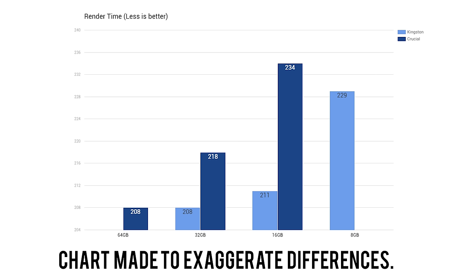Moving to the Kingston: 32GB yielded a 3 minute and 28 second render time, 16GB yielded 3 minutes and 31 seconds, and 8GB yielded 3 minutes and 49 seconds. So what I found is that the Kingston is actually faster than the Crucial by a significant amount. I think it has something to do with the CAS latency and speed, as the Kingston is 2800MHz versus 2400MHz on the Crucial, and it also has a CAS latency of 14 instead of 16.